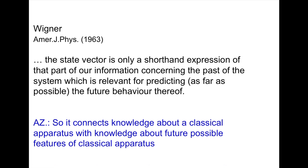The next picture is a Wigner quote — Wigner, director of physics, 1963 — where I found the word 'information' actually used. He wrote that the quantum state is a short-term expression of that part of our information about a system which is relevant to predicting, as far as possible, the future behavior. I would go even further and say that it represents information about the classical apparatus and its possible future features. There's no need to talk about anything else — it's classical information which allows us to make predictions about possible future classical experiments.